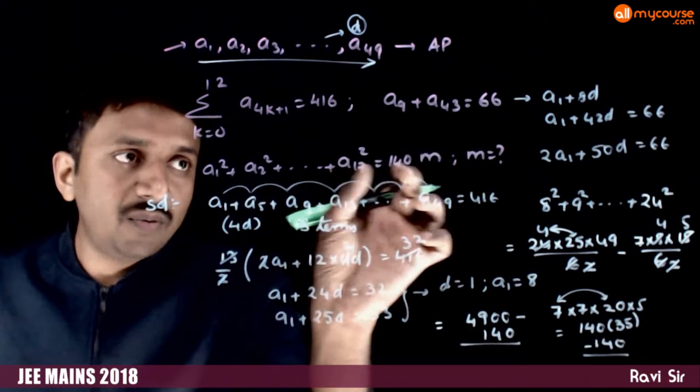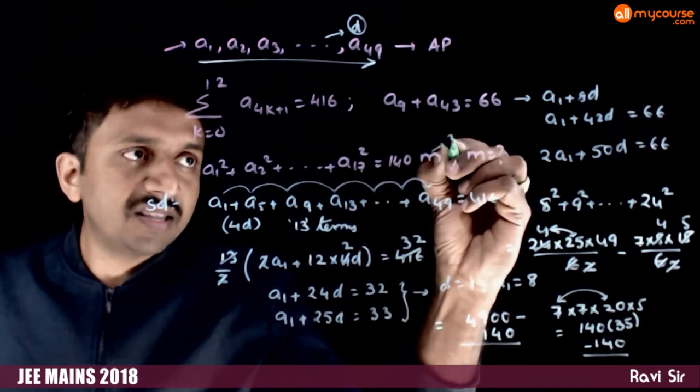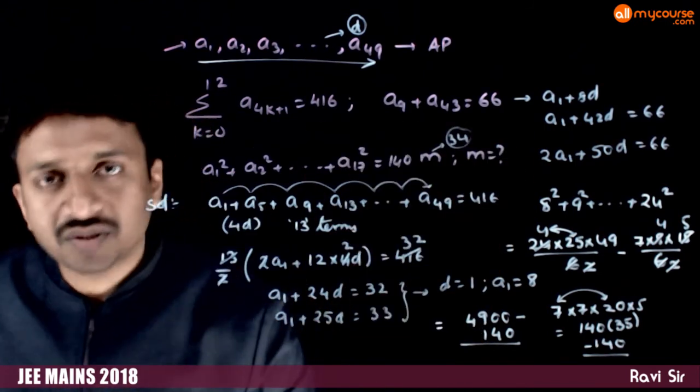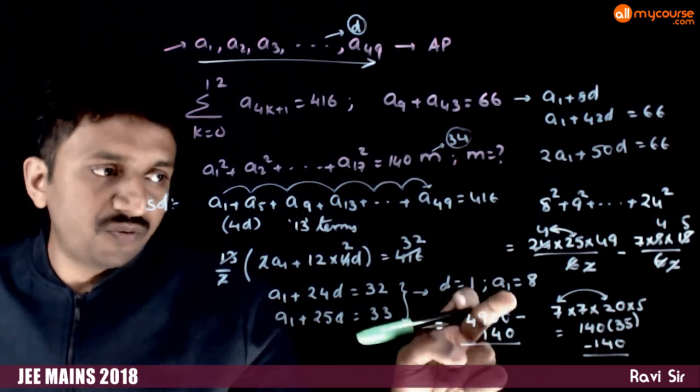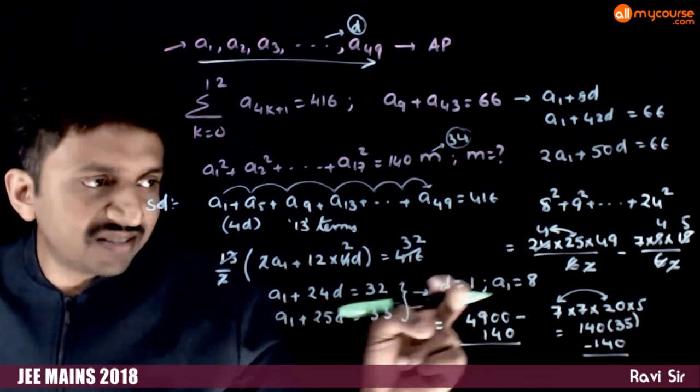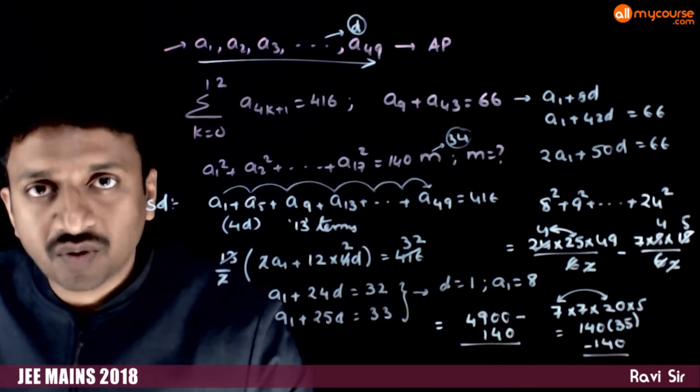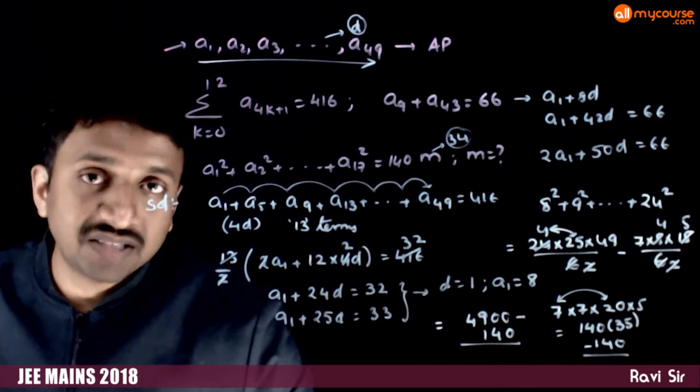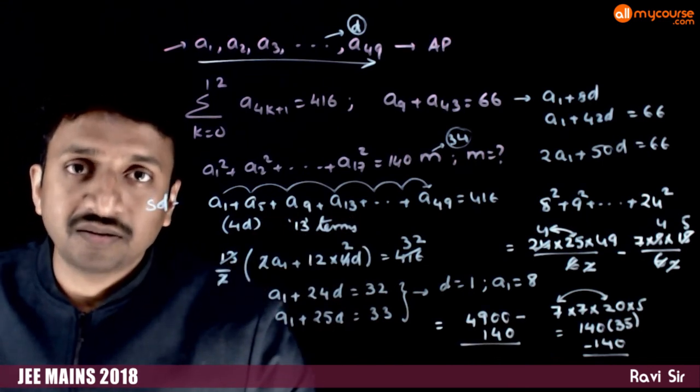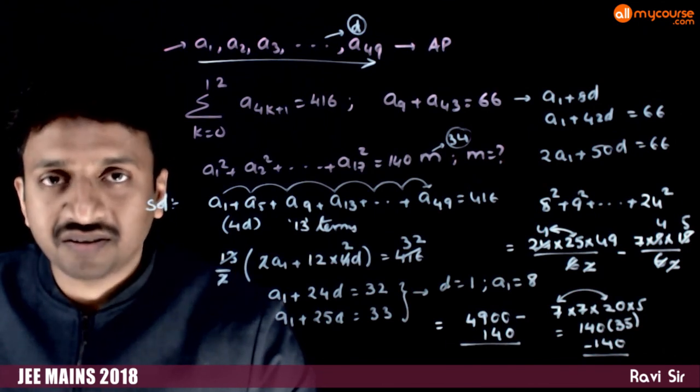This is equal to 140 times 34 is the answer to this question. So, 4900 minus 140 is 140 times 35 minus 140 times 1, which equals 140 times 34. So 34 is the answer to this question. Thank you.